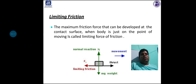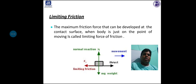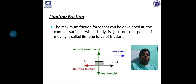The next point is limiting friction. The maximum friction force that can be developed at the contact surface when the body is just on the point of moving is called limiting friction. If a body is resting on a surface, the body weight W equals M times G acts downward, and normal reaction N acts upward. The force required just before the body starts moving is called the limiting force.